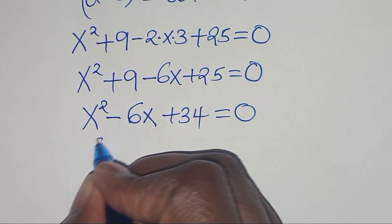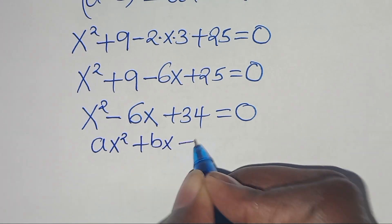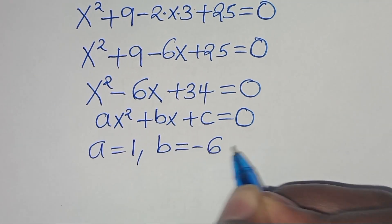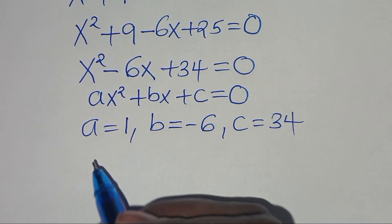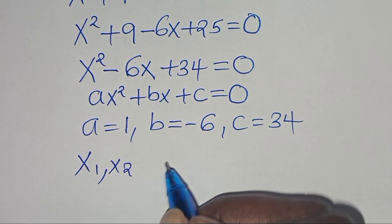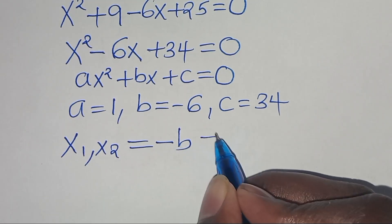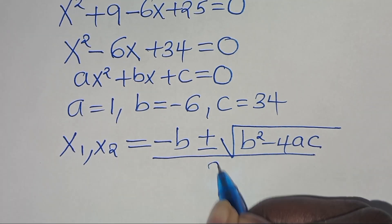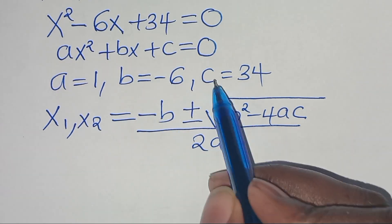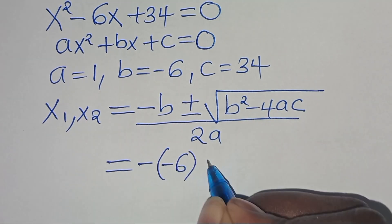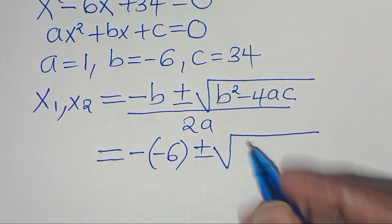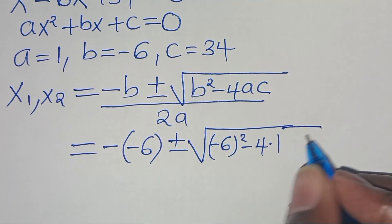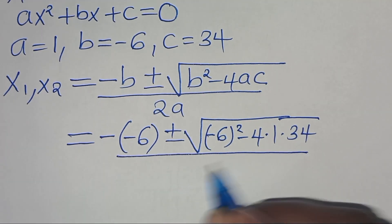This is a quadratic equation of the form ax squared plus bx plus c equal to 0. From this quadratic equation, a is equal to 1, b is equal to minus 6, and c is equal to 34. Applying the quadratic formula — minus b plus or minus the square root of b squared minus 4ac, all divided by 2a — and substituting, we have minus minus 6 plus or minus the square root of minus 6 squared minus 4 times 1 times 34, everything divided by 2 times 1.